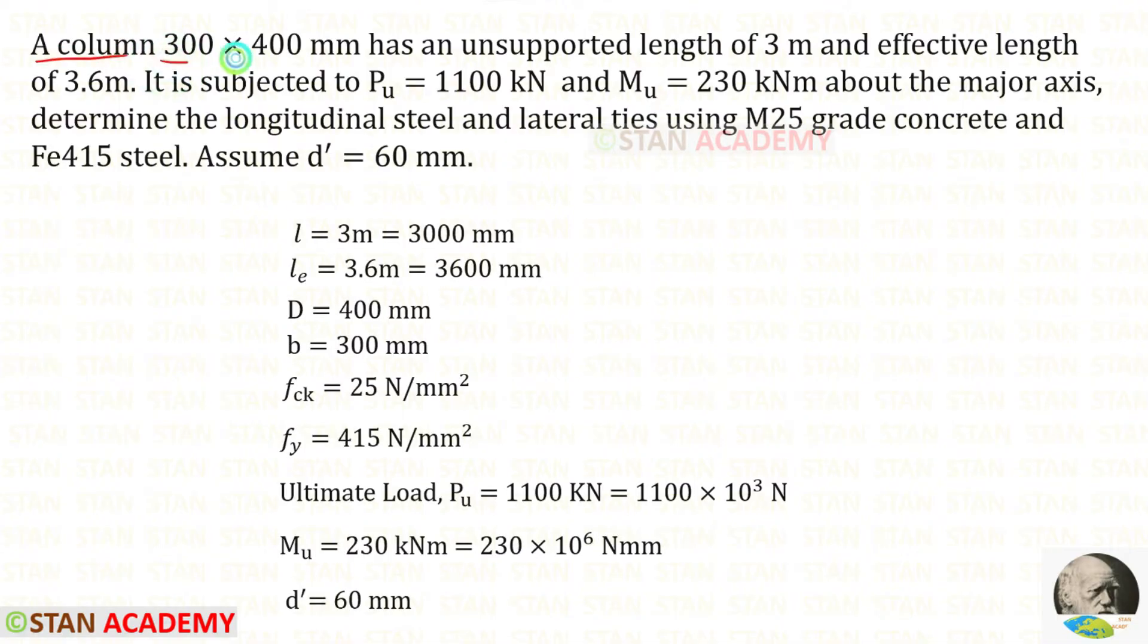A column 300 by 400 millimeter, we have to keep the big side as D and the small side as B, has an unsupported length of 3 meter and effective length of 3.6 meter. We can convert that into millimeter.